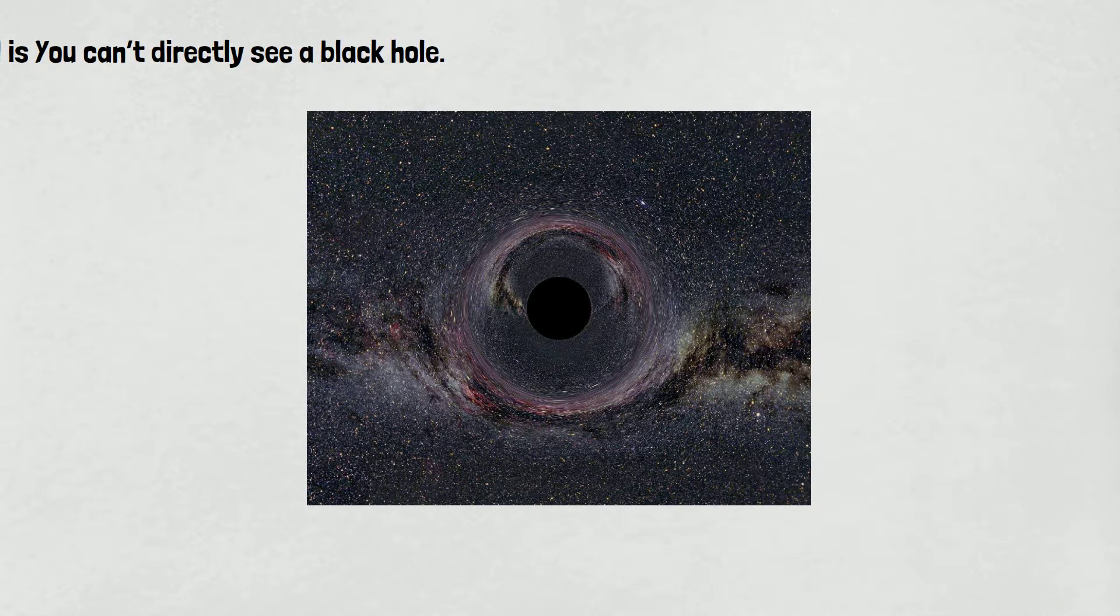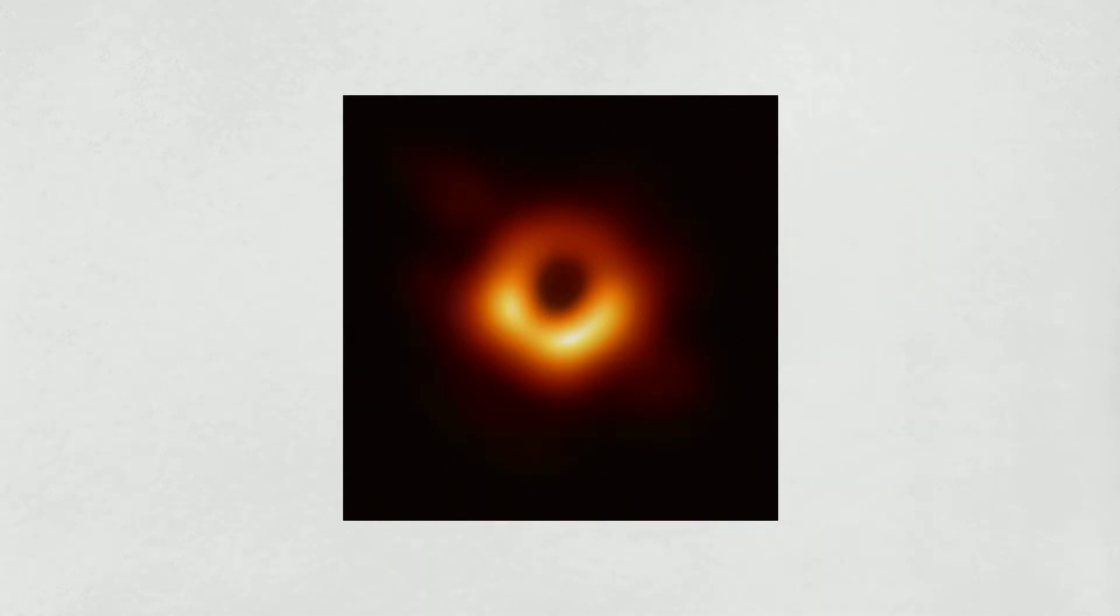Since no light can escape from the black hole, it's impossible for us to sense the hole directly through our instruments, no matter what kind of electromagnetic radiation you use. But the first picture of a black hole had already been taken, right? How is it possible? Well, that picture shows us the shadow of a black hole, not a black hole exactly.